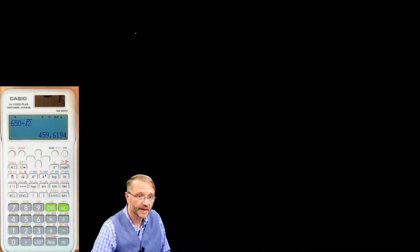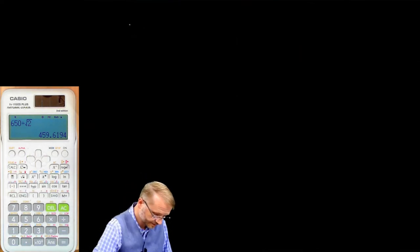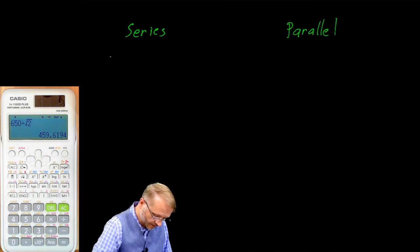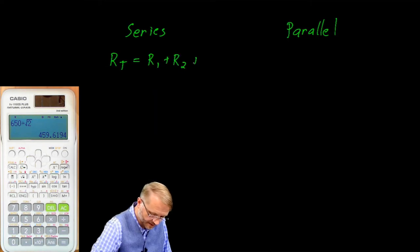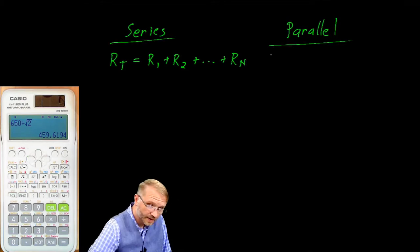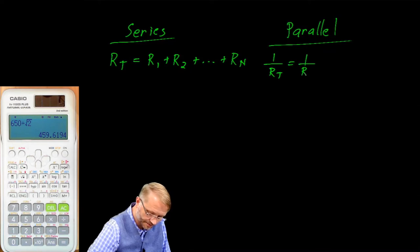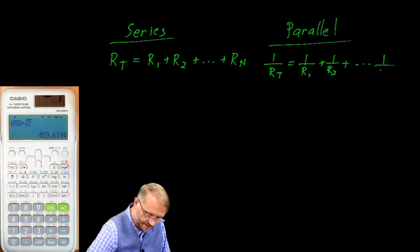We have one more thought, and then we're going to tie this all together. You recall series and parallel circuits for resistors? We said the total resistance in a series circuit is R1 plus R2 plus, and in general out to the nth resistor. For parallel resistors, we say 1 over the total resistance is equal to 1 over R1 plus 1 over R2 plus as many resistors as you have.